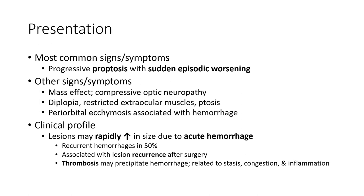Clinical profile: the lesion may repeatedly increase in size due to acute hemorrhage. Recurrent hemorrhage occurs in 50% and is associated with lesion recurrence after surgery. Thrombosis may precipitate hemorrhage related to venous congestion and inflammation.